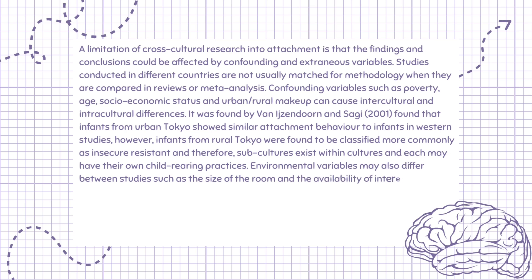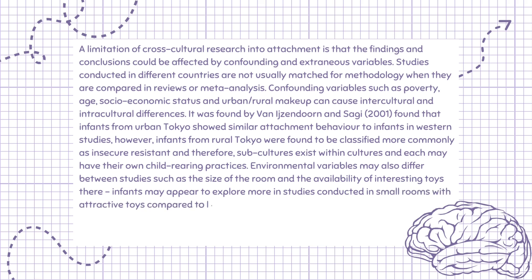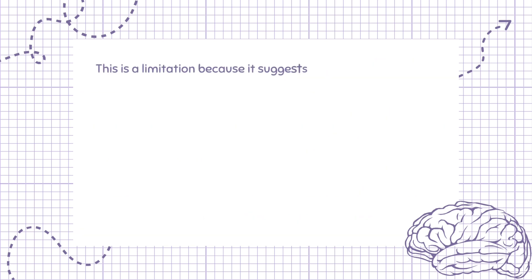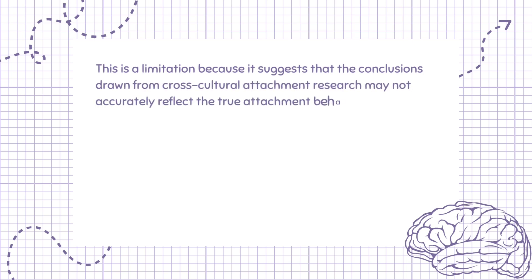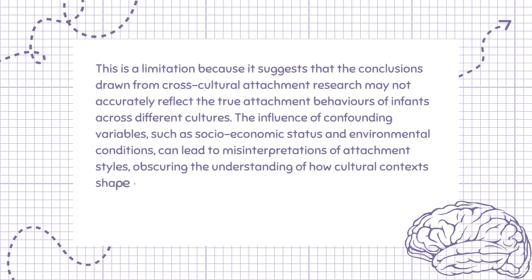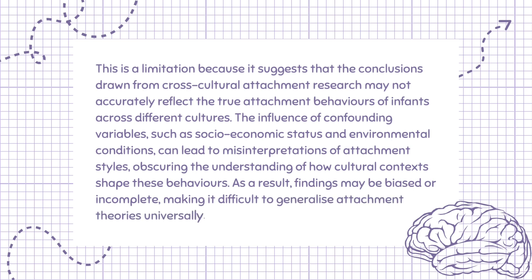Environmental variables may also differ between studies, such as the size of the room and the availability of interesting toys. Infants may appear to explore more in studies conducted in small rooms with attractive toys compared to large bare rooms, and therefore may show less visible proximity-seeking behavior but be classified as avoidant. This is a limitation because the influence of confounding variables such as socioeconomic status and environmental conditions can lead to misinterpretations of attachment styles, making it difficult to generalize attachment theories universally.